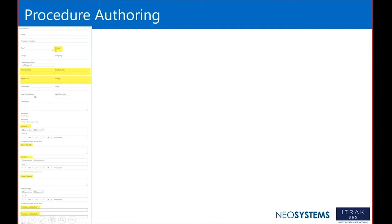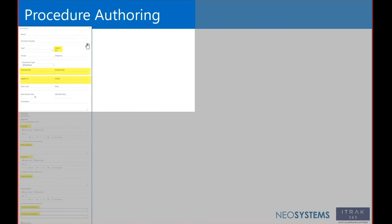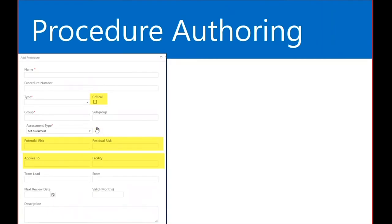This is what the authoring template looks like in the portal. Very similar to other styles — red asterisks indicate required fields and everything else is optional. We need a name and a type. The type determines which path it will take: whether it requires approval or goes straight from draft to publish. There is also an optional procedure number field.